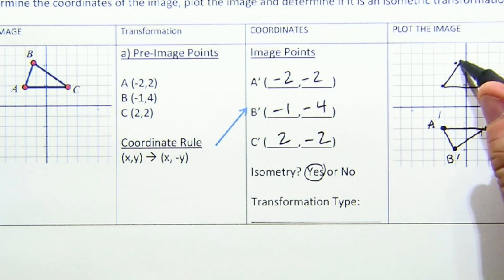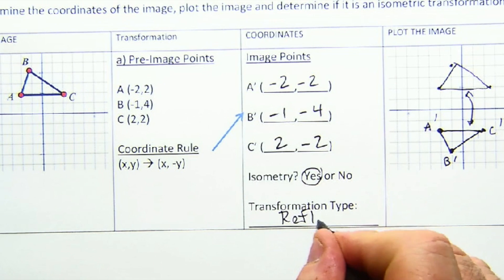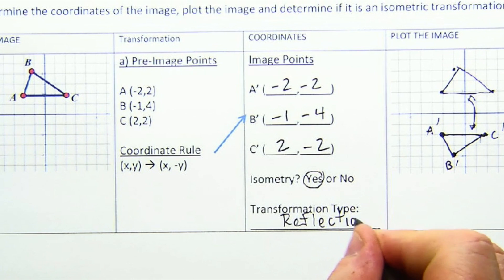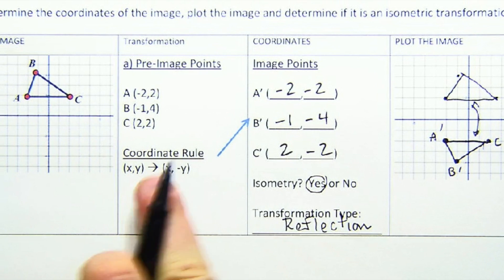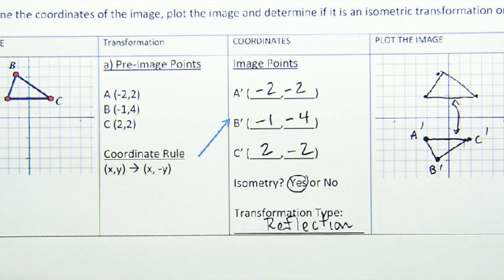This might help me identify. This is a reflection. So this is another way to practice our coordinate rules, plotting our points, and then coming up with whether it's an isometry or not.